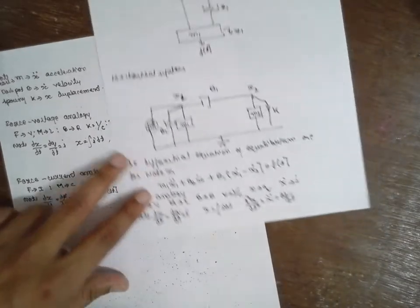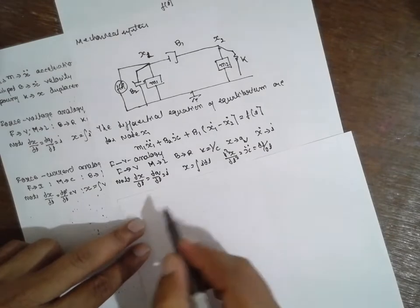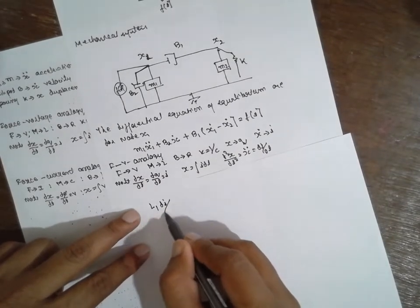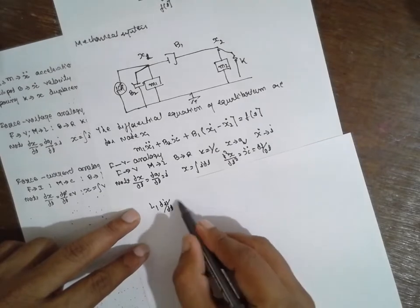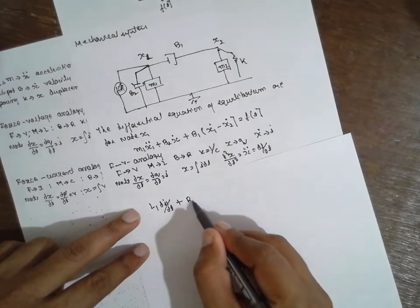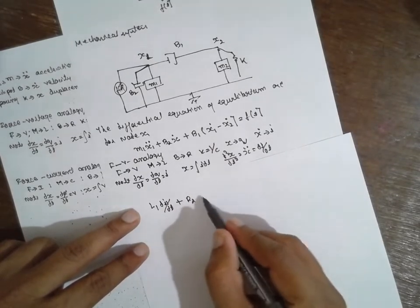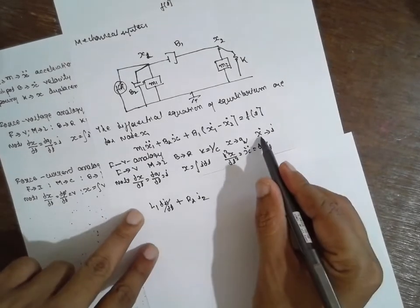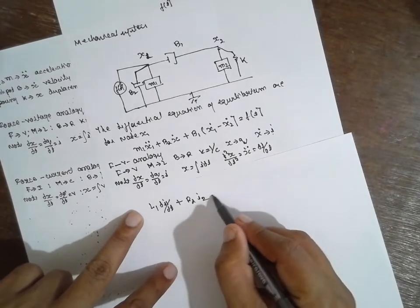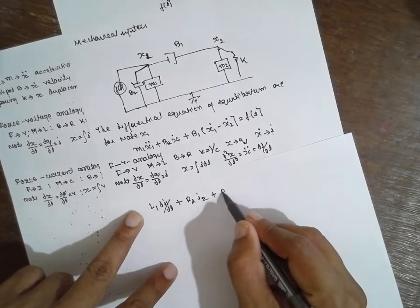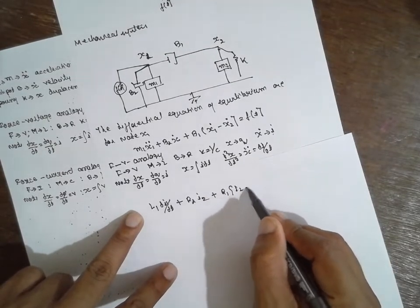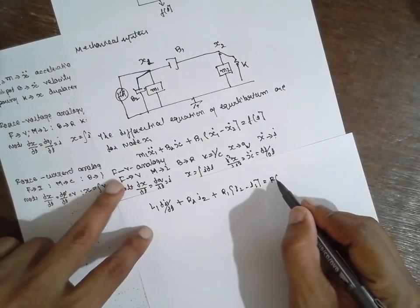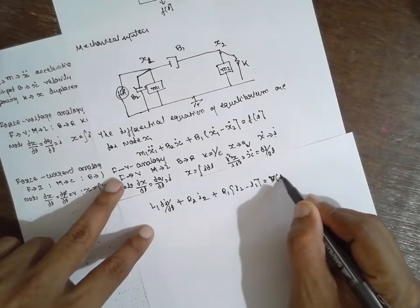I will replace this one. What is M? M will be L1 DI1 divided by DT plus B, which is R2, times I1 plus R1 (I1 minus I2) is equal to F of t. F has to be replaced with voltage V of t.